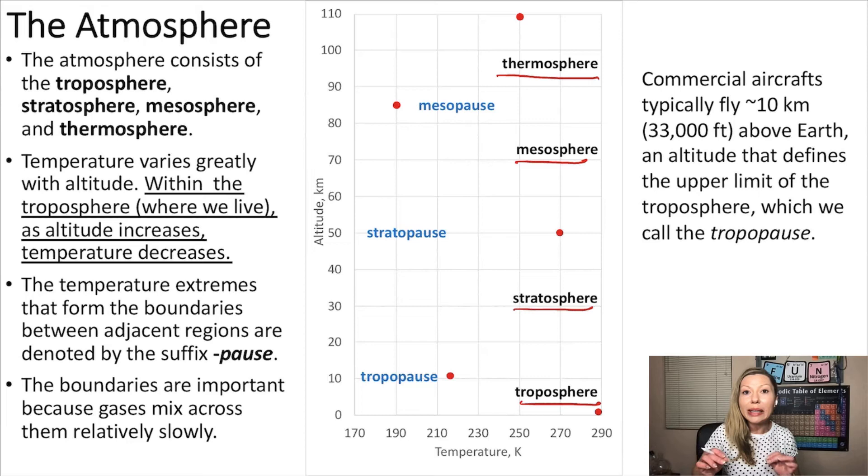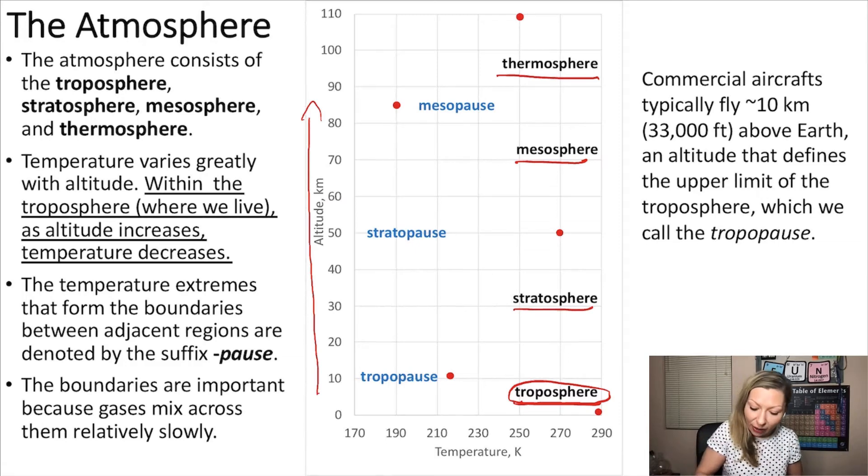What's interesting is that as we increase the altitude, the temperature varies greatly. We live most of our lives in the troposphere, and commercial aircraft typically fly around 10 kilometers above Earth, around the so-called tropopause.